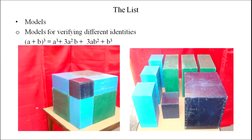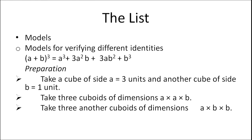From this we can prove (a+b)³ = a³ + 3a²b + 3ab² + b³. For example, take a cube of side a = 3 units and another cube of side b = 1 unit, take 3 cuboids of dimensions a×a×b, and 3 more cuboids of dimensions a×b×b. Similarly, we can solve the identity a³ + b³.